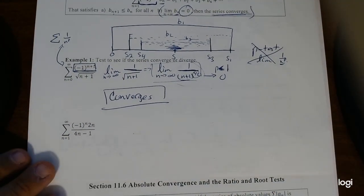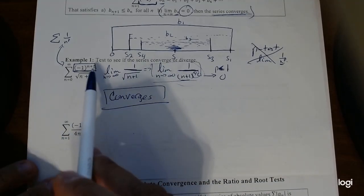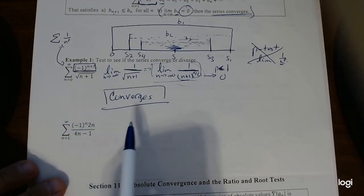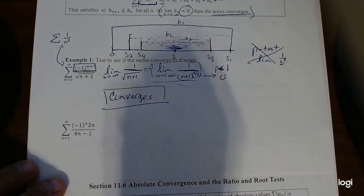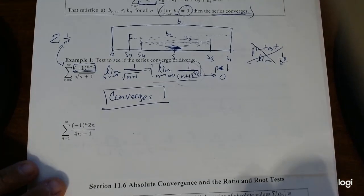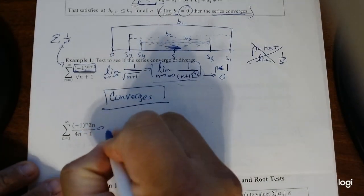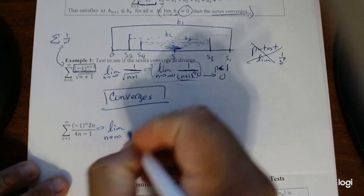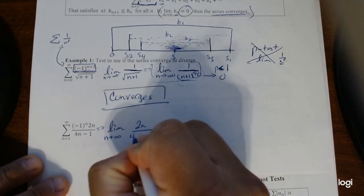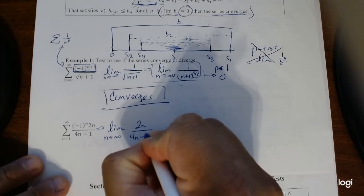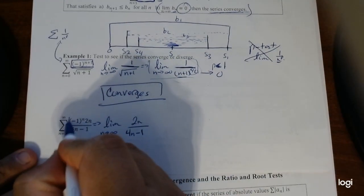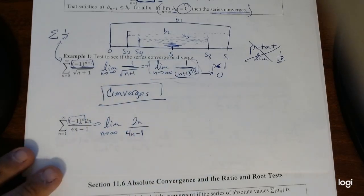All right, let's try the next one. Same thing, alternating notice. It doesn't matter if you have n plus 1 or n. So you know it's going to be alternating no matter what. Plus minus, plus minus, plus minus. So first one checks out. So next thing we're going to find is the limit as n goes to infinity of 2n over 4n minus 1.